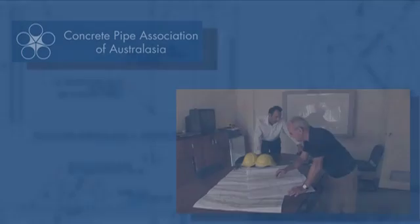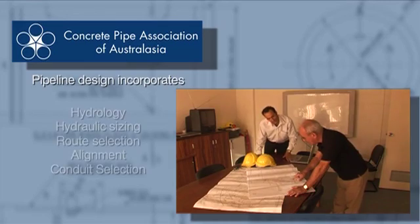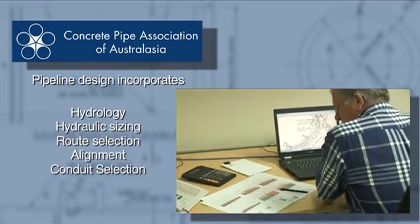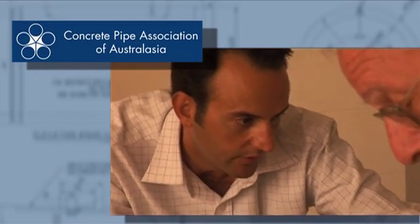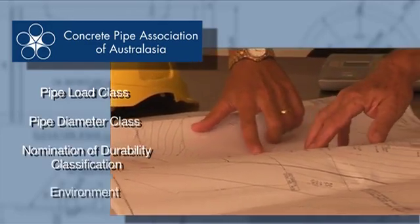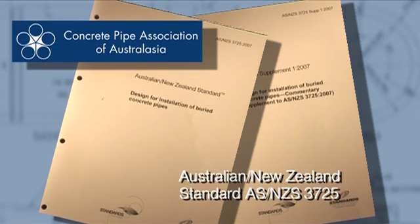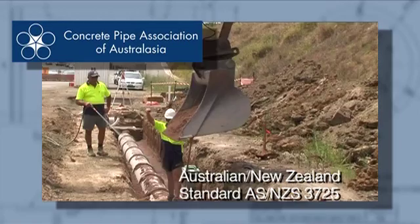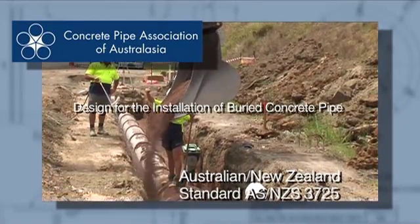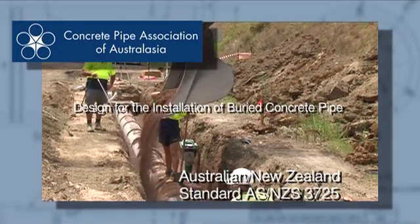Pipeline design is carried out by a project design team. Pipeline design incorporates hydrology, hydraulic sizing, route selection and alignment, and conduit selection. The design team must sign off on pipe load class, pipe diameter class, classification of use and the environment it will be placed in. The design needs to comply with the Australian and New Zealand standard ASNZS 3725, designed for the installation of buried concrete pipe, as well as other accepted codes of practice such as industry and CPAA specifications.